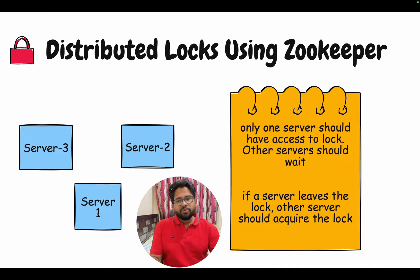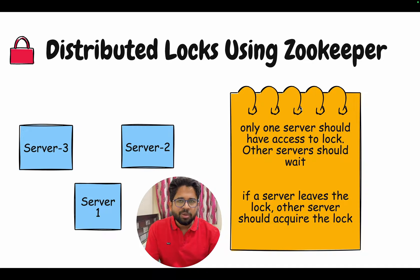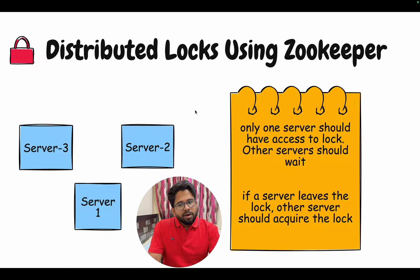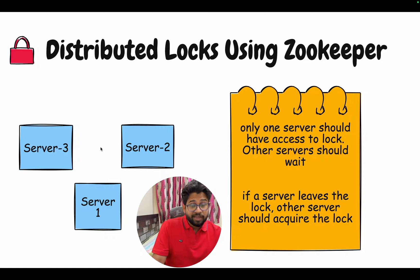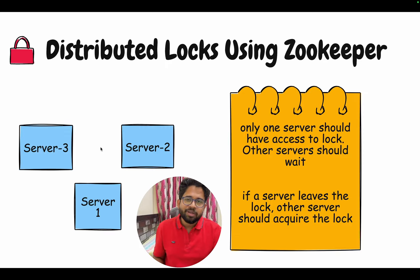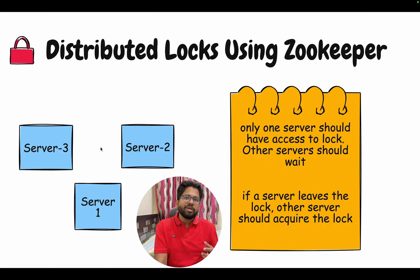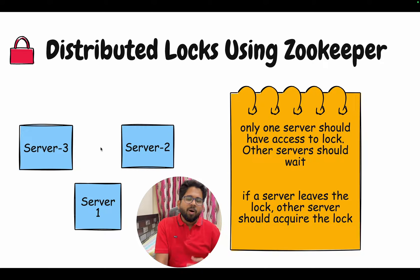Hello everyone. In this video, we are going to talk about distributed lock using Zookeeper. Distributed lock means that only one of the servers will be able to access a particular resource at a particular time. If there are multiple servers trying to access a particular resource, then only one of those will be able to access it and others will be denied. Later they can retry if they want to, or they can choose not to retry.